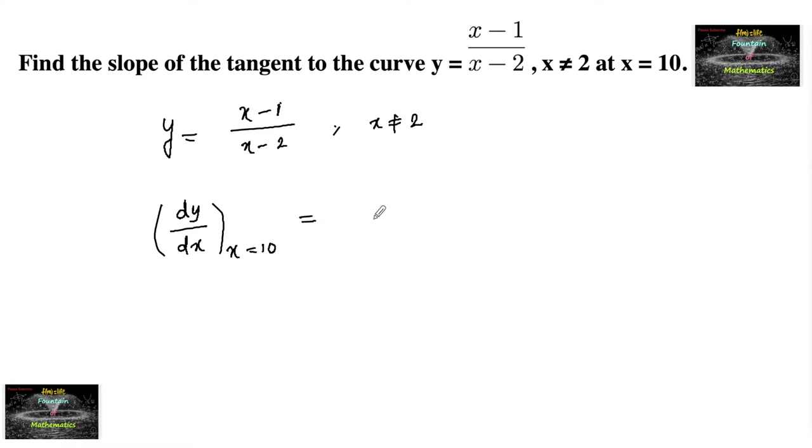Differentiating this curve using the quotient rule: x minus 2 times differentiating x minus 1, which is 1, minus x minus 1 times differentiating x minus 2, which is again 1, all over x minus 2 whole square.